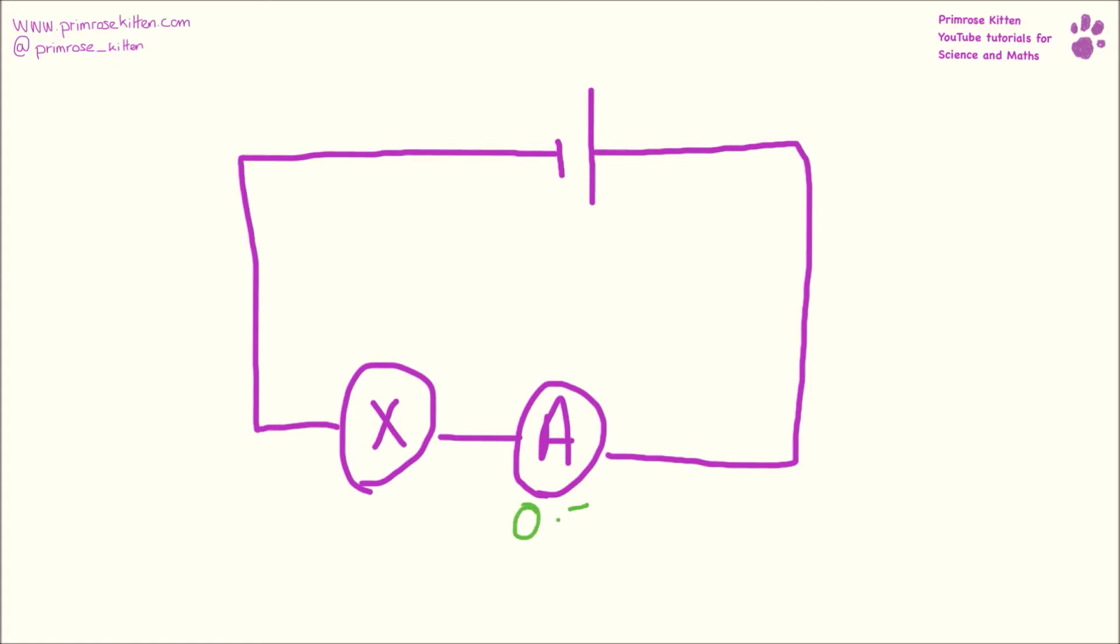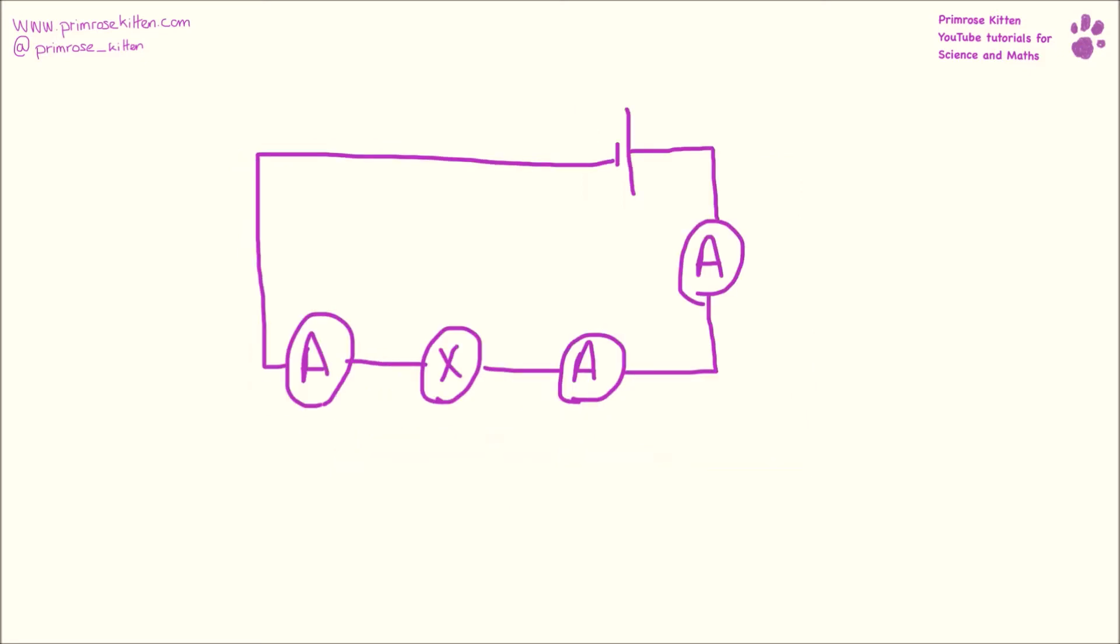So if this ammeter is giving a reading of 0.5 amps, then if I put three ammeters into exactly the same circuit it doesn't matter where they are, they are all going to give the same reading 0.5 amps.